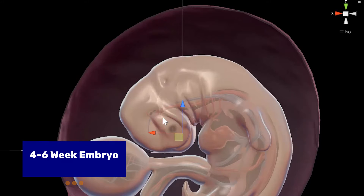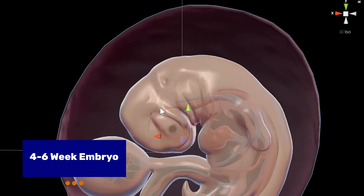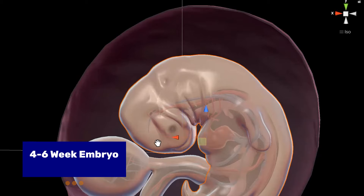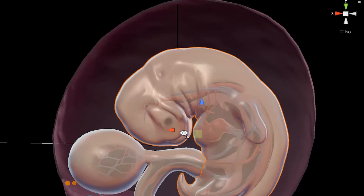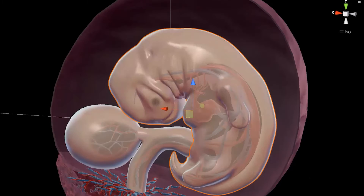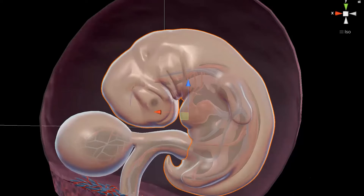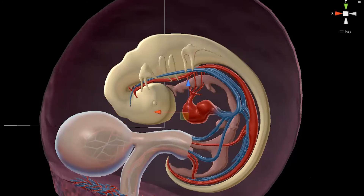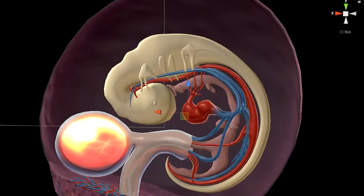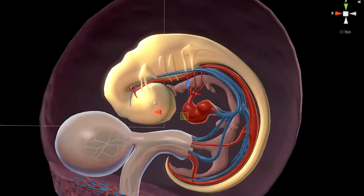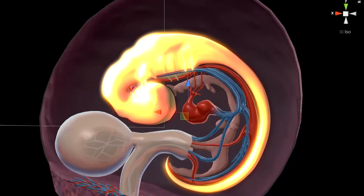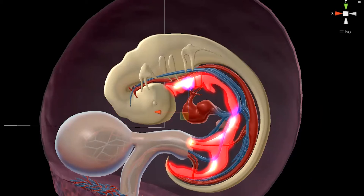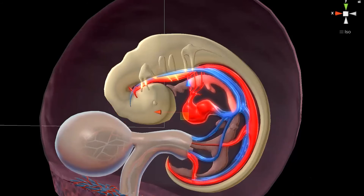We'll also be adding two models showing a developing embryo and fetus. The 4-6 week embryo model is zoomed in to show key structures such as the chorion, yolk sac, and yolk, as well as the beginnings of the nervous, digestive, and circulatory systems.